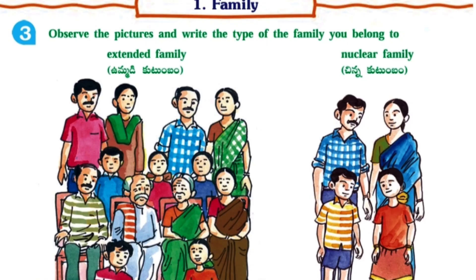Next, third one — Observe the pictures and write the type of family you belong to. Here two types of families are given: Extended family and nuclear family. You have to write which family you belong to — extended or nuclear.